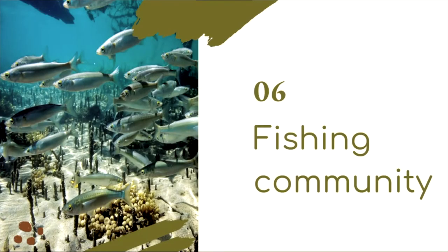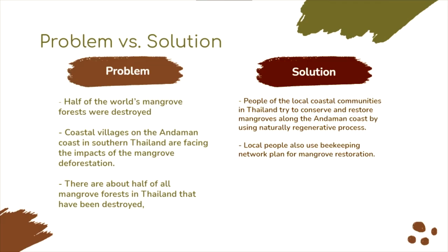The next topic is fishing communities. Half of the world's wild mangrove forests have been destroyed, cleared, and exploited in the past 50 years. In Thailand, most people from coastal villages on the Andaman coast in southern Thailand are facing the impact of mangrove deforestation. About half of all mangrove forests in Thailand have been destroyed, leading to poverty, land degradation, loss of natural resources, and increasing vulnerability to natural disasters. The solution is that local coastal communities in Thailand are trying to conserve and restore mangroves along the Andaman coast using naturally regenerative processes.